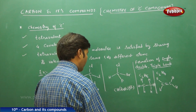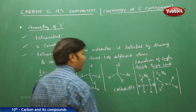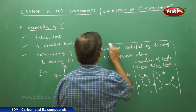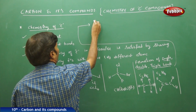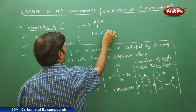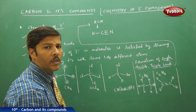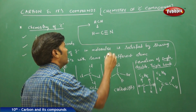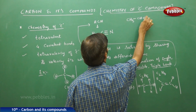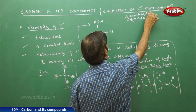Carbon can also form a triple bond. For example, take HCN — in HCN, between hydrogen and carbon it forms a single bond, and between carbon and nitrogen it forms a triple bond. Sometimes it can form a double bond and single bond simultaneously — for example, CH3CHO, which is called acetaldehyde.